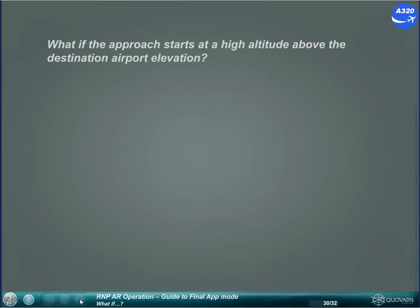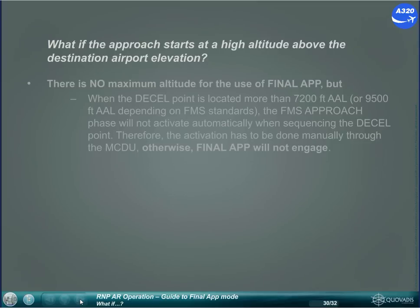What if the approach starts at a high altitude above the destination airport elevation? There is no maximum altitude for the use of Final Approach, but when the D-cell point is located more than 7,200 feet above aerodrome level, or 9,500 feet above aerodrome level depending on FMS standards, the FMS approach phase will not activate automatically when sequencing the D-cell point. Therefore, the activation has to be done manually through the MCDU; otherwise, Final Approach will not engage.